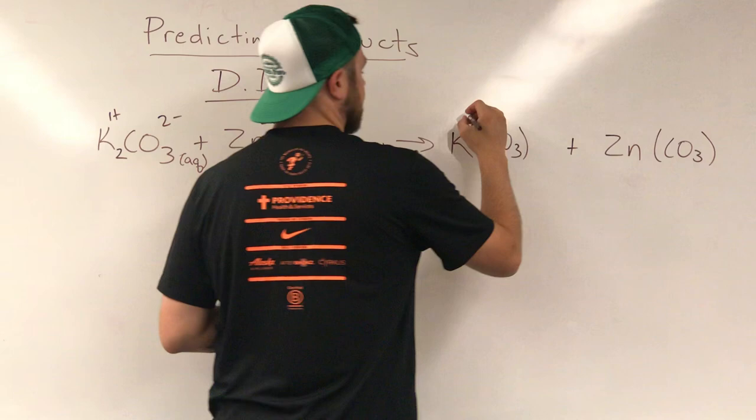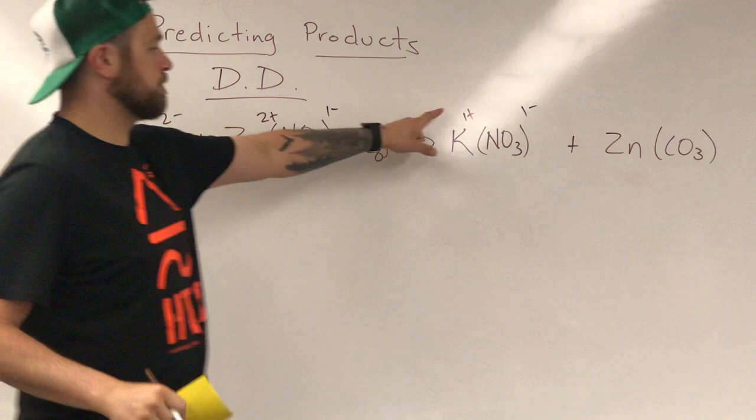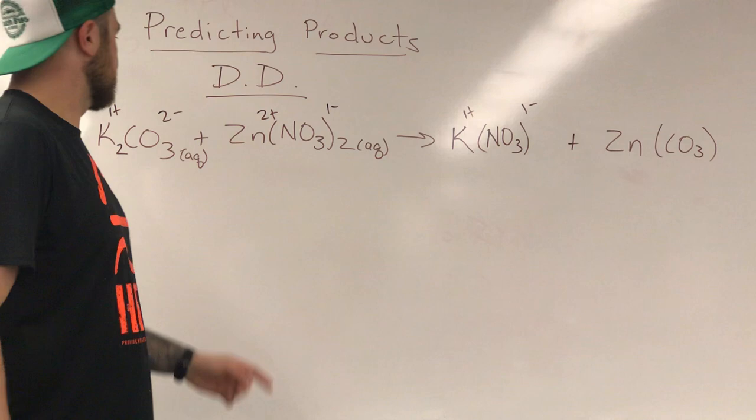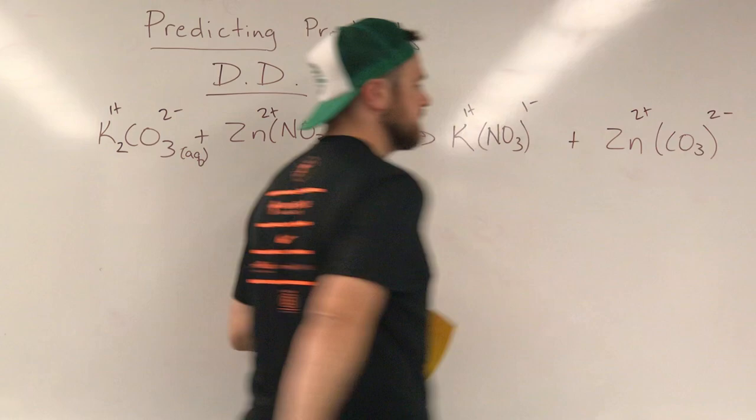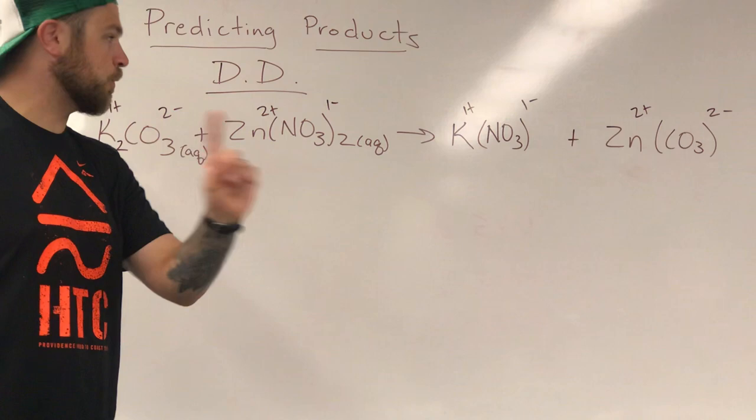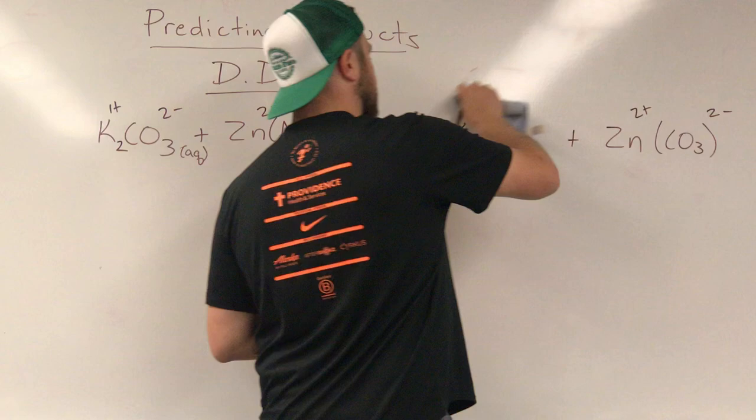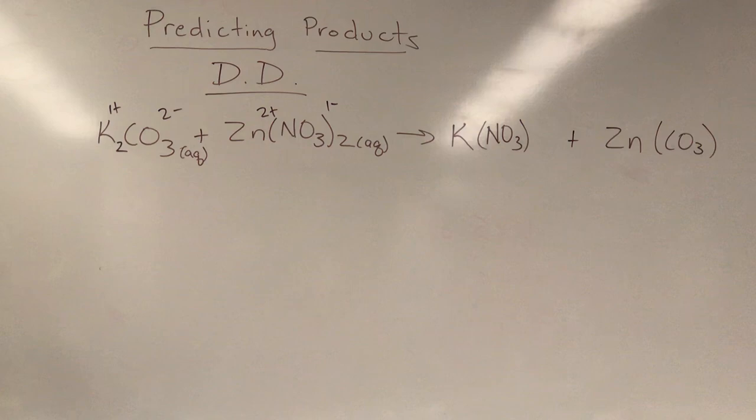Again, let's cross charges. We know that potassium has a one plus, nitrate has a one minus. That's really nice because positive one and negative one will cross to make one and one, so we don't need to do anything. Zinc was a two plus, carbonate was a two minus. That's also really nice because we know that two and two will cross and reduce to form one and one again. So both of our formulas on that side are actually in really good shape. I'm going to go ahead and erase those just so they don't confuse us when we go to balance.